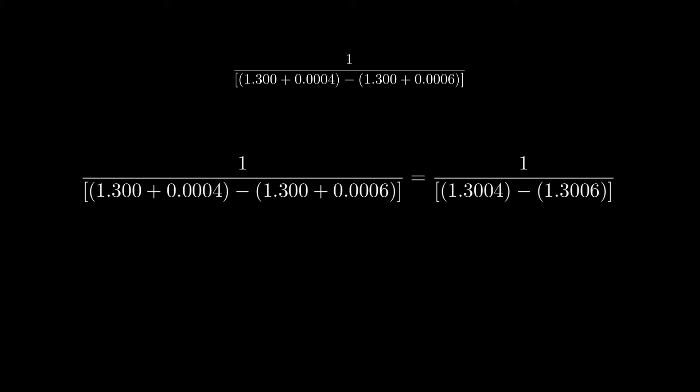If we were using normal arithmetic, we would then simply add the denominator, receiving this, which is negative 5,000. However, if we were to use a calculator which rounded to three places to the right of the decimal place after every calculation, we would instead get this in the denominator, which is equal to negative 1,000.